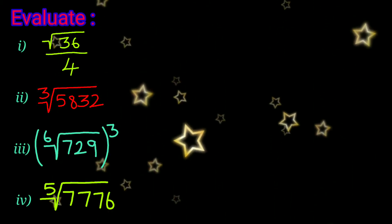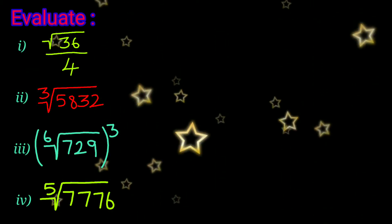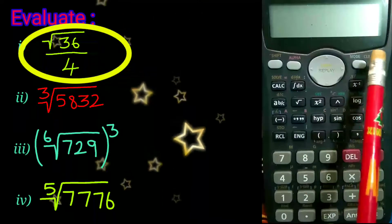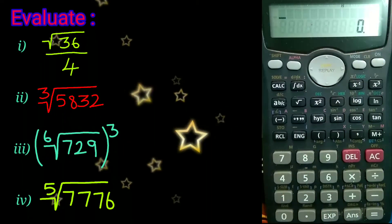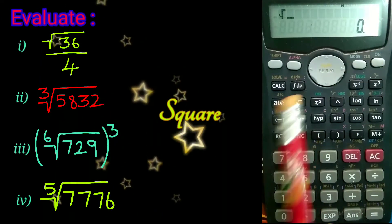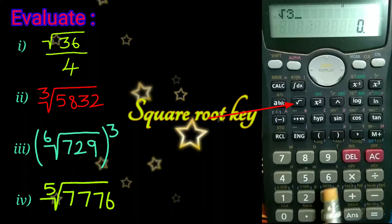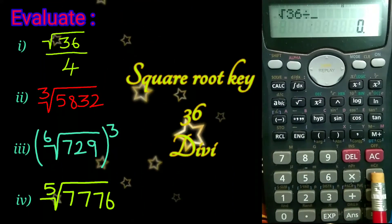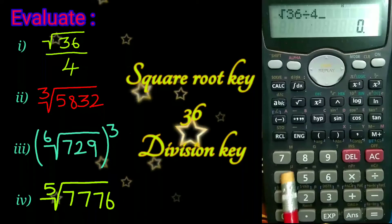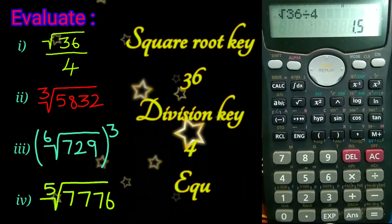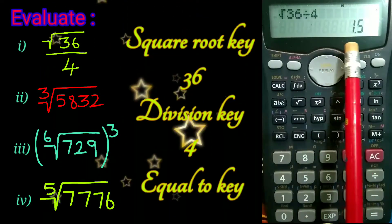First, let's find the square root of 36 divided by 4. Turn on the calculator first. Press the square root key, followed by 36 divided by 4. Press equal to. We have 1.5.